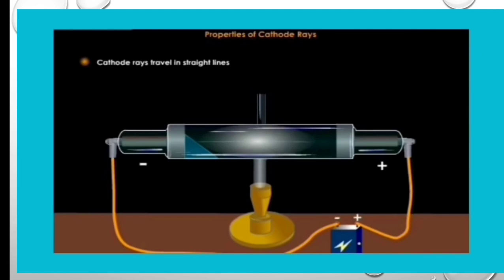Cathode rays travel in straight lines. When an opaque object is placed on the path of cathode rays, the shadow is cast on the glass wall, opposite to the cathode. This shows that cathode rays travel in straight lines.